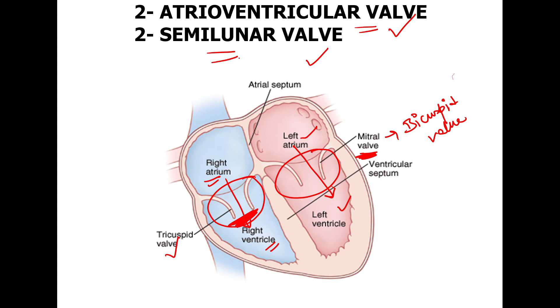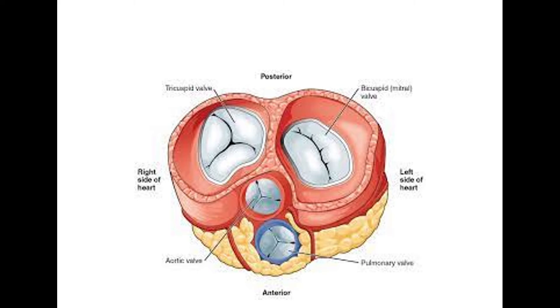There are two semilunar valves present in the heart. The first one is the pulmonic valve and the second one is the aortic valve.